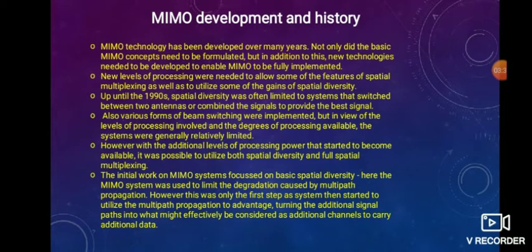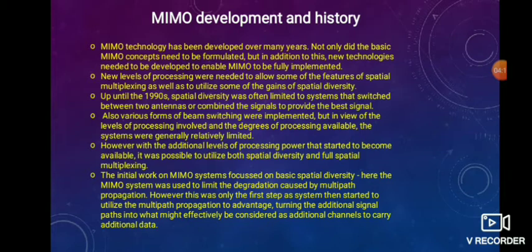Now, where did MIMO come from — what is its development and history? MIMO technology has been developed over many years. Not only did the basic MIMO concepts need to be formulated, but new technologies needed to be developed to fully implement MIMO. Up till now, MIMO has not been fully implemented. New levels of processing were needed to allow features of spatial multiplexing as well as to utilize gains of spatial diversity. Up to the 1990s, spatial diversity was often limited to a system which switched between two antennas or combined signals to provide the best signal.